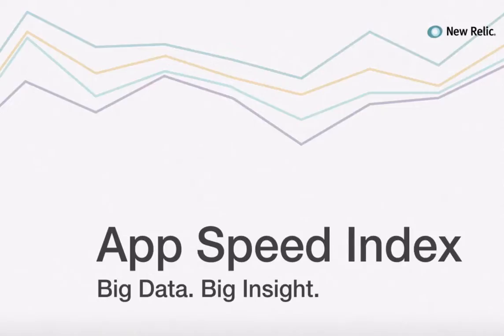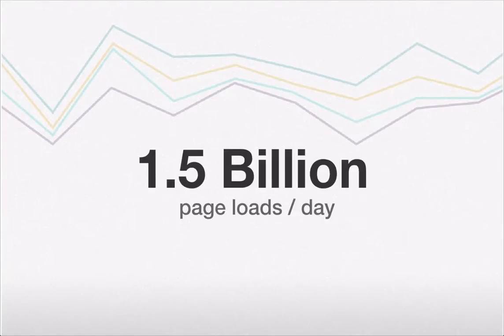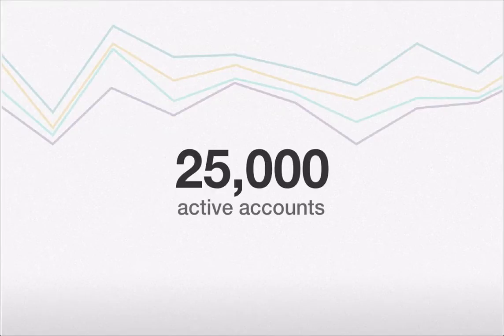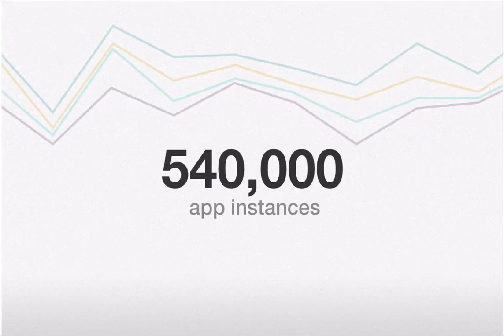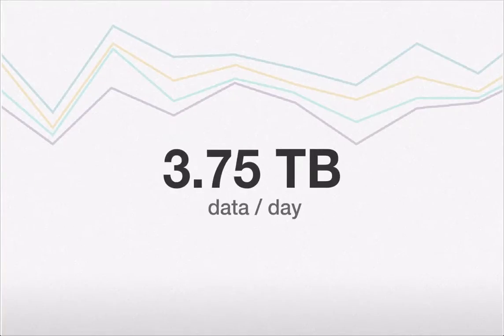This is the first feature we've introduced that leverages our big data to help you manage your app. How big is our data? Well, we're growing fast, but at the time of this recording, each day New Relic collects and manages 55 billion performance metrics and monitors 1.5 billion page loads on behalf of our 25,000 customers and their 540,000 application instances. This equates to 3.75 terabytes of new data each day.